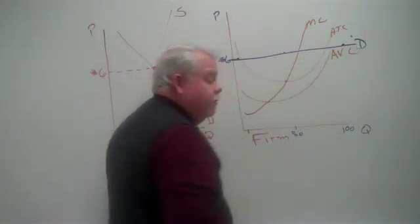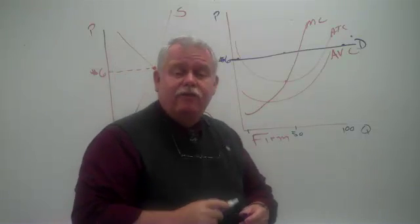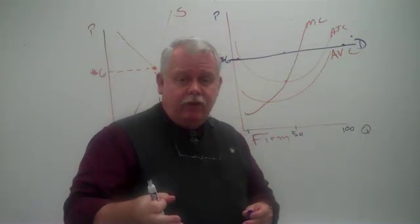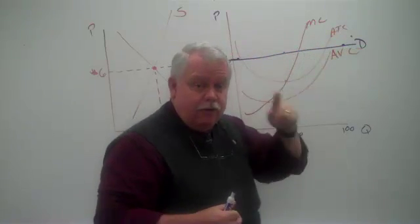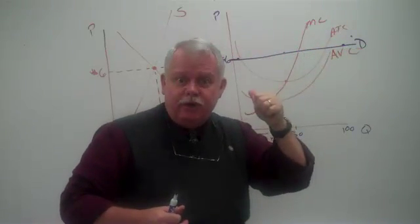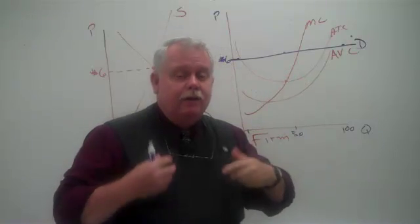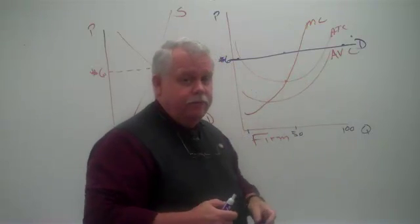And so what this represents is their demand curve. They've got a demand curve. It's a horizontal line. It's perfectly elastic. When you see a perfectly elastic demand curve, you ought to go, whoa wait, that's perfect competition. There's four assumptions behind that. That's what you want to recognize.